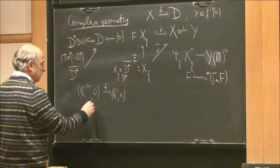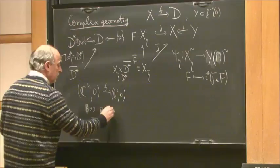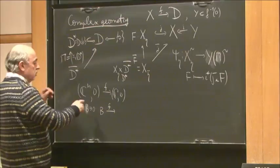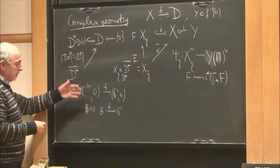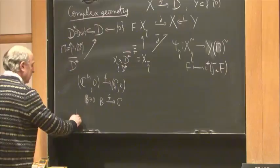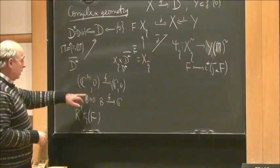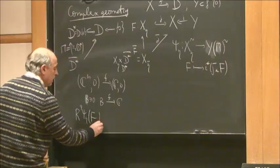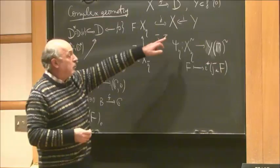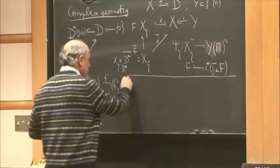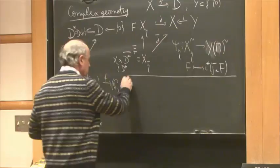The reason we consider the subspace Y instead of the whole preimage of zero: if we have an analytic function on a small ball B mapping to C, in complex geometry one is interested not in the whole preimage of zero but in the stalk of the sheaf at zero — the restriction of a sheaf defined outside the preimage of zero to the point zero, which is just this Y.